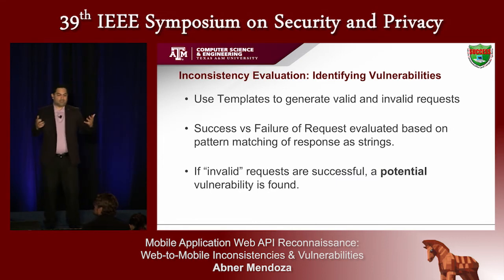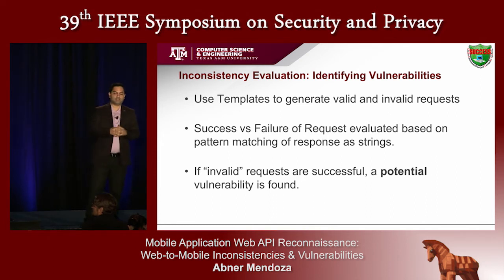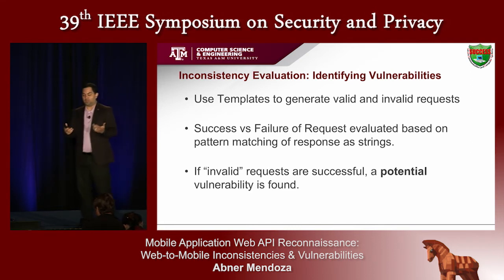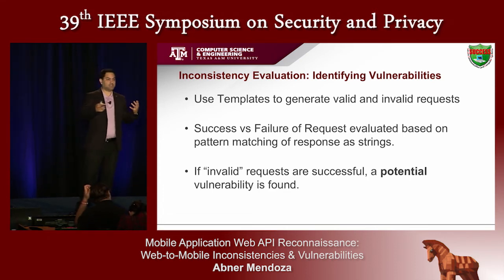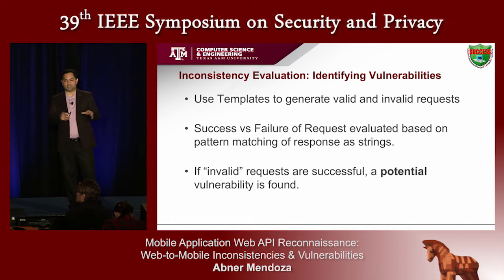Our evaluation or inconsistency evaluation module takes these templates and generates both valid and invalid requests. It generates valid requests to determine a baseline of what a successful server response looks like, then determines success versus failure based on evaluation and pattern matching of response strings. If an invalid request is successful, then a potential vulnerability is found. We say 'potential' because manual validation is still required — some human intelligence is needed there.